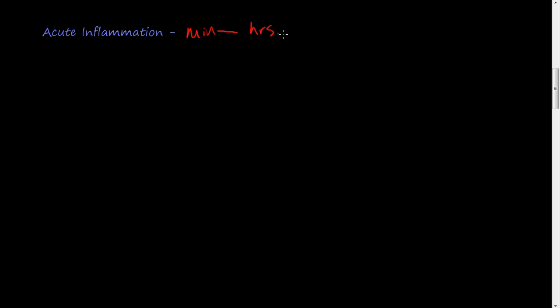Hi and welcome to the video on acute inflammation. In this video we're going to discuss some of the tenants of acute inflammation. Acute inflammation usually happens from minutes to hours to about three days — that's usually the classification of acute inflammation — and there are two components of acute inflammation.